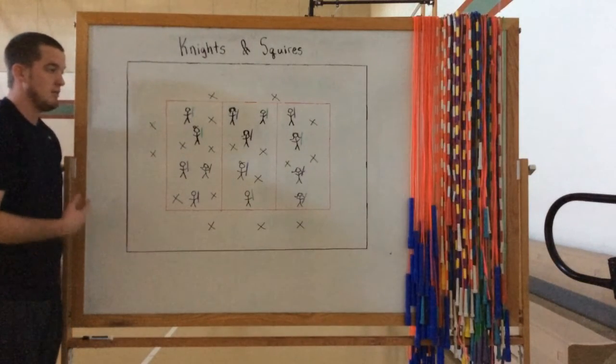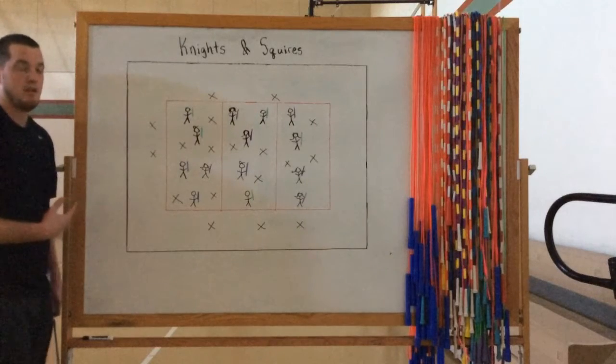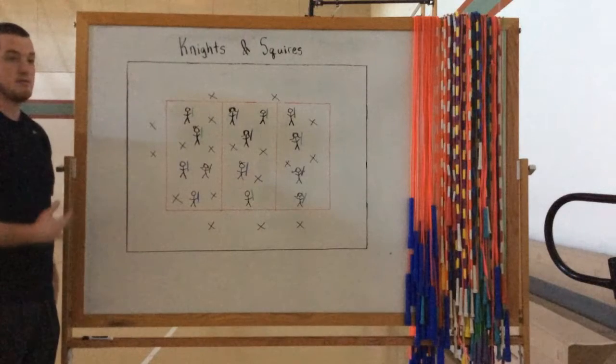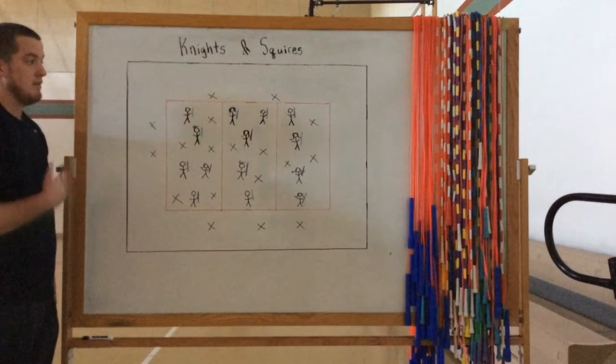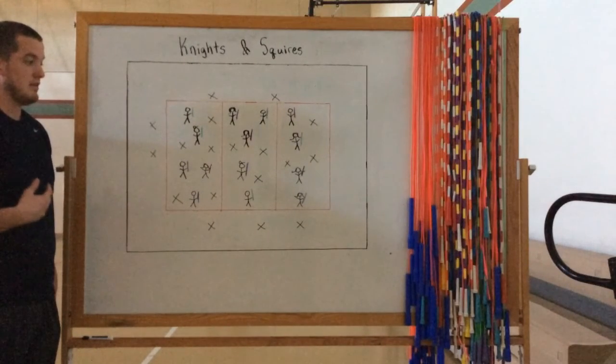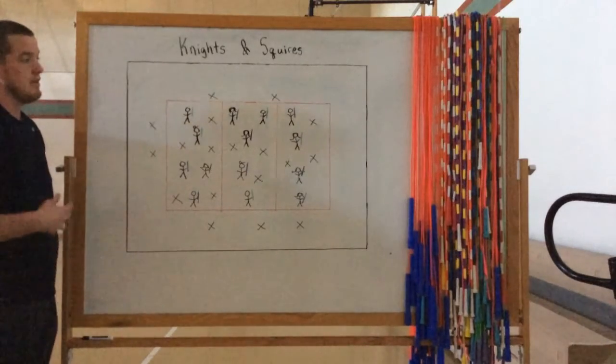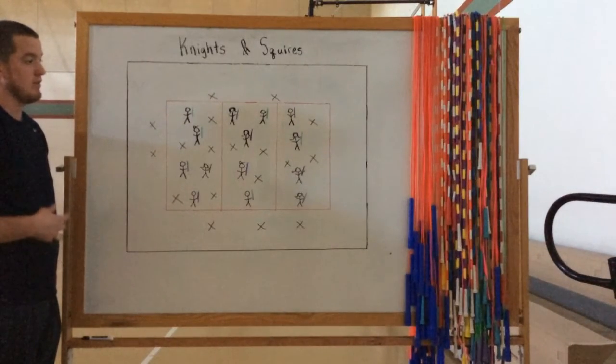Like I said, we usually play this with third to fifth grade. And if you repeat the rules enough times the first couple times you play it, from then on the kids understand that we're walking fast and tagging below the waist and we're not sword fighting. That's not what we're working on here.